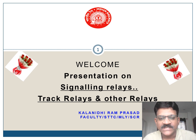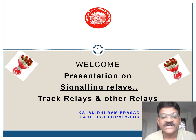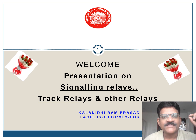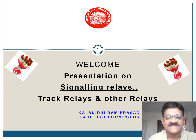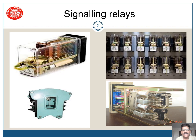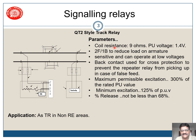Namaskar and welcome to the fourth part of Relays. In this presentation we will be discussing about different types of relays like track relays and other relays used in railway signaling systems. In the first three parts we discussed about different types of Q-style relays. In this part we will be discussing other relays like track relays, slow acting relays, slow to pick up relays, and other special relays. Now let us start with the track relays — the QT2 style track relay.